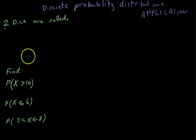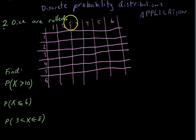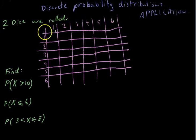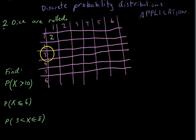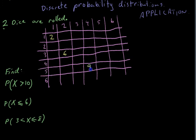First thing to do is set up a two-way table so we can figure out our probability distribution. So there's my two-way table. These numbers represent the first dice: 1, 2, 3, 4, 5, or 6. These numbers represent the second dice — all the numbers that can happen on the second dice. If the first dice has a 1 and the second dice has a 1, then the total is going to be 2. If the first dice has a 2 and the second dice has a 3, that's going to be 5. If the first dice has a 4 and the second dice has a 5, that means it's going to be a 9.